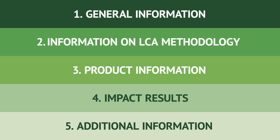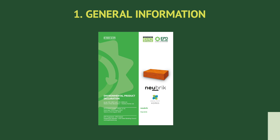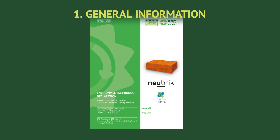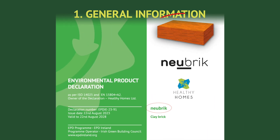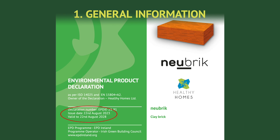We will explain what is normally included under each of these headings. On the cover of the EPD, you will find key information about the assessed building product, including the product's name and a picture of the product. The cover states the owner of the declaration, which is usually the manufacturer. It also gives the date of issue and expiry of the EPD. An EPD is valid for a period of five years from its publication.